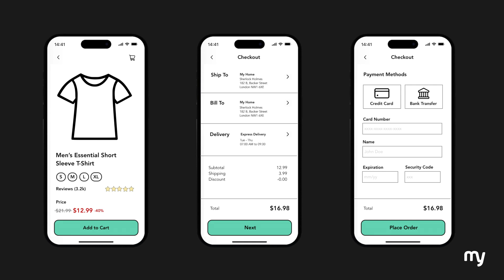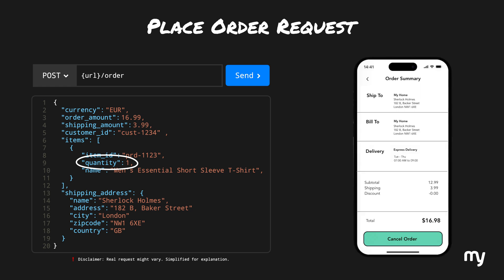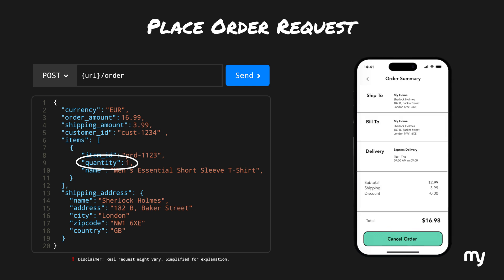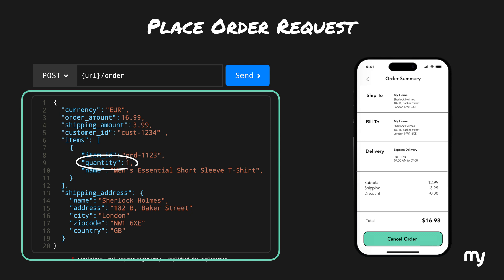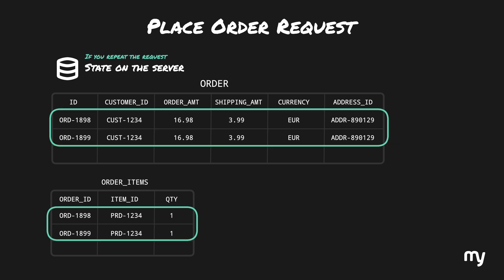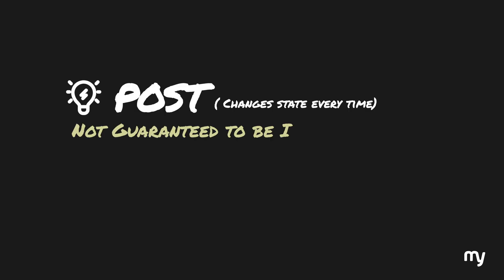Now that you've updated your address, it's time to place the order. An oversimplified version of the place order request might look like this. After placing the order, you realize that instead of buying two shirts, you only bought one. So you add the item to your cart again and place the order once more — essentially repeating the same request. The state on the server was one order, now there should be two. If you repeat this request multiple times, the state changes every time. This behavior is not idempotent, and whenever you want such behavior, use POST. We can conclude that the POST method is not guaranteed to be idempotent.